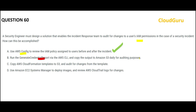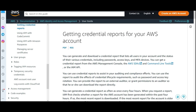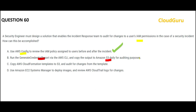Option B says to generate the credential report and copy the output to S3. The credential report will only give you the status of various credentials — passwords, access keys, and MFA devices. It will not give you log data for auditing when a permission changed, so B is wrong.